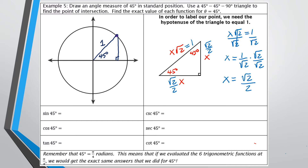I'll label the sides of the triangle using what I figured out: both legs are √2/2, and the hypotenuse is 1. Labeling with x, y, and r: r is 1 (the radius). x is the horizontal distance along the x-axis, and y is the vertical distance. So the ordered pair for the point at 45 degrees would be (√2/2, √2/2).